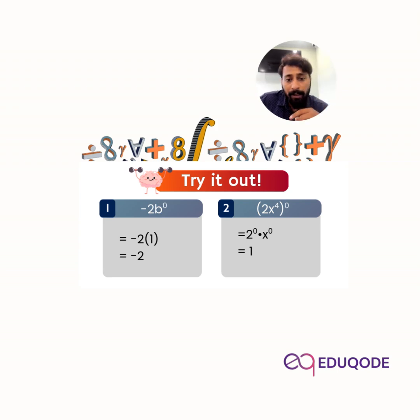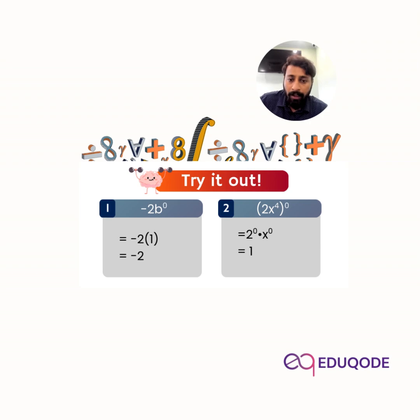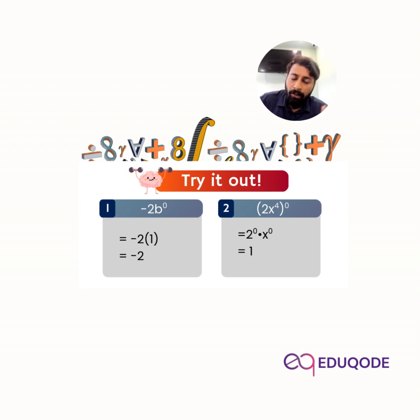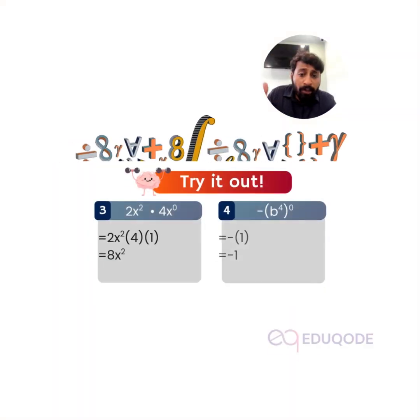Second example: two x power four, whole raised to power zero. When the whole bracket is raised to power zero, it applies to the coefficient as well as the base. So two power zero multiplied by x power zero — four multiplied by zero is zero — gives one multiplied by one, which equals one.